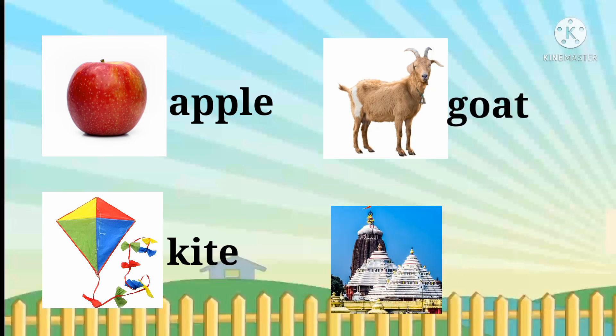Then, what is this? This place is a temple. Children, what are all the pictures in this picture? You all know them. So, everything around us has a name. All our other things have a name.